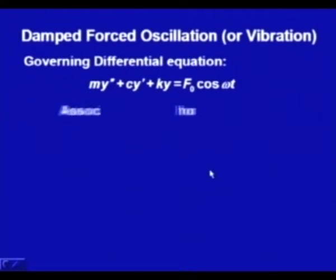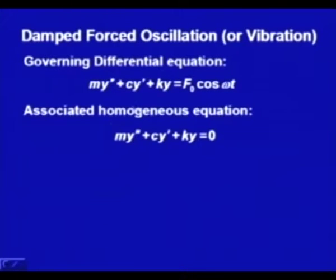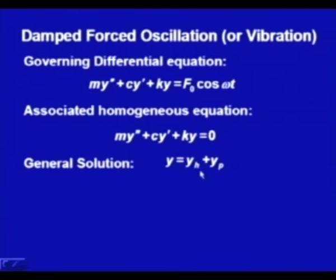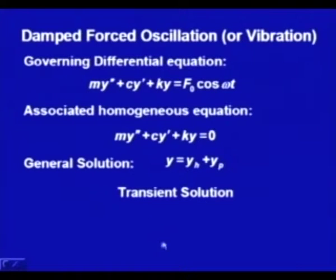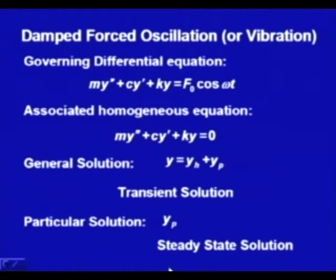This is a non-homogeneous equation. The associated homogeneous equation would be m y'' + c y' + k y = 0. The general solution of this non-homogeneous system is of the form y_h + y_p, where y_h is the general solution of the corresponding homogeneous equation and y_p is the particular solution. This general solution is called the transient solution and the particular solution y_p is called the steady state solution.